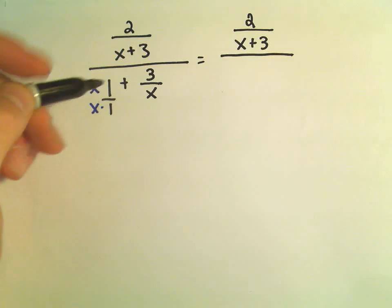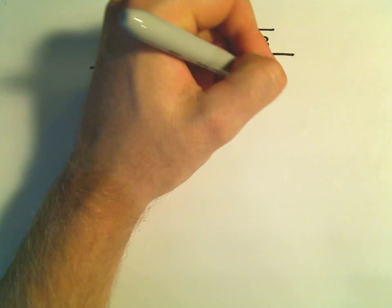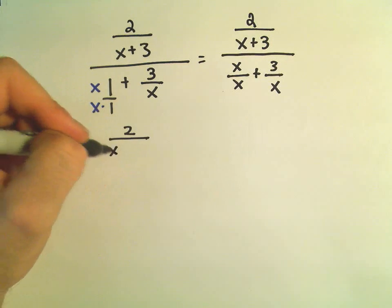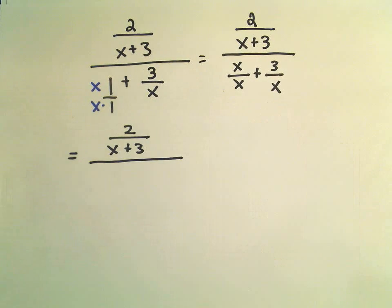And then in the denominator, we would have x over x plus 3 over x. And again, the whole reason we did that is so that we could write the denominator as a single fraction. So oftentimes, I'll even skip this step.